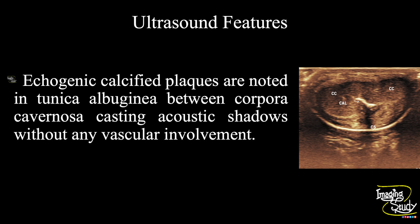In summary, echogenic calcified plaques are noted within the tunica albuginea between the two corpora cavernosa, casting acoustic shadows without any vascular involvement, suggesting a case of Peyronie's disease.